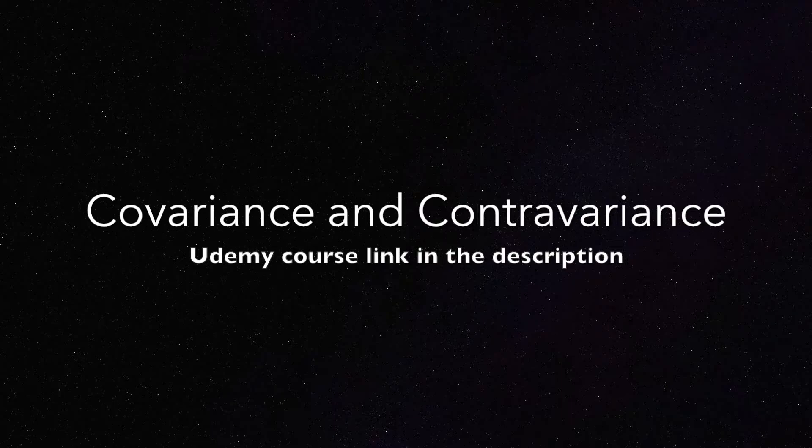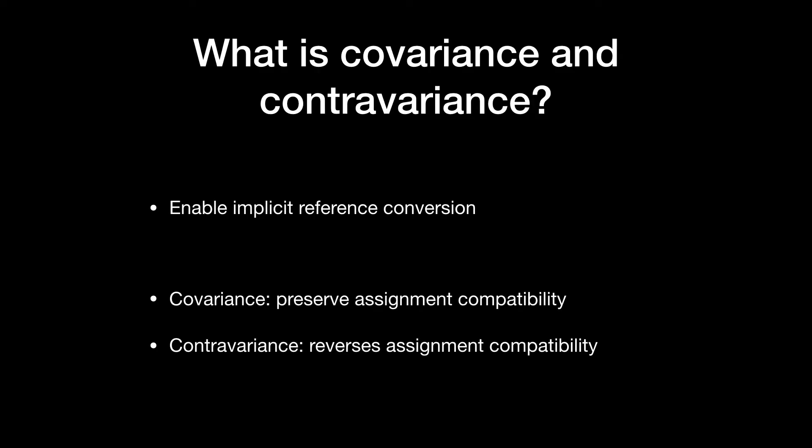If you don't know what Udemy course I'm talking about, I linked it in the description with a giant discount code. Covariance and contravariance are not C# or .NET only terms — they have a relatively complicated mathematical background and many programming languages support them. I want to keep this video very practical, so I will only focus on C# and show you what it means when you write code.